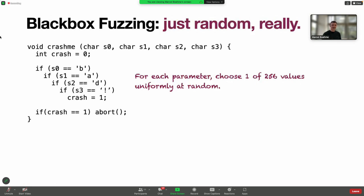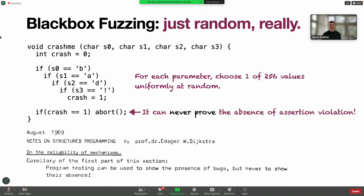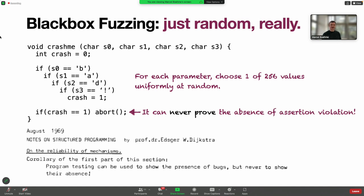On the other side of the spectrum, there's black box fuzzing. Black box fuzzing doesn't know anything about the program. It simply generates random inputs. On most machines, a character can take one of 256 values. We randomly generate these values using sampling uniformly at random with replacement. Of course, it can never prove the absence of errors. In fact, there's this great note by Dijkstra saying program testing can be used to show the presence of bugs, but never to show their absence.